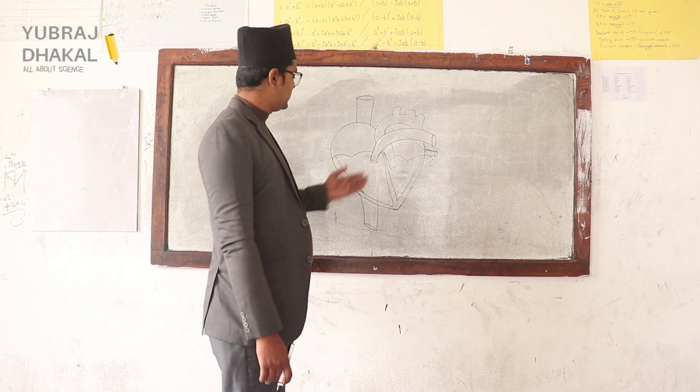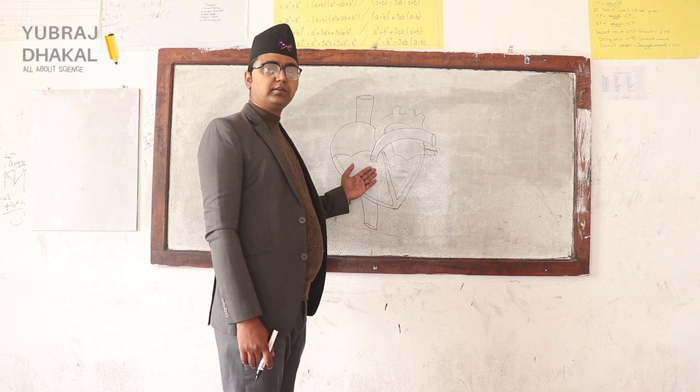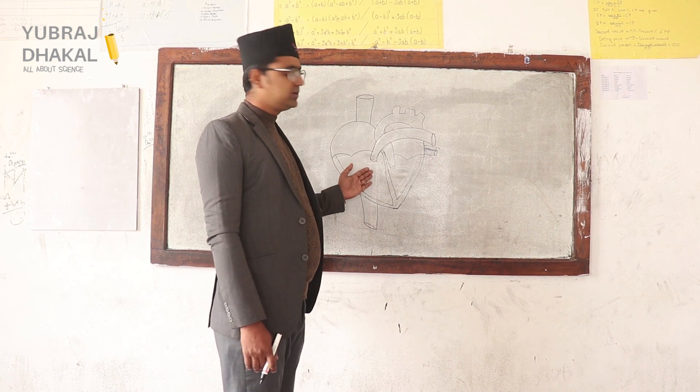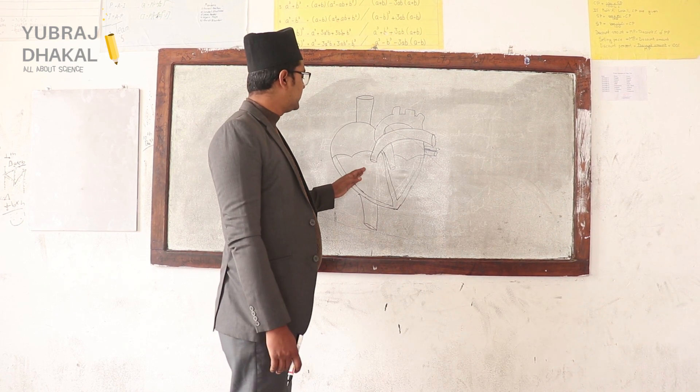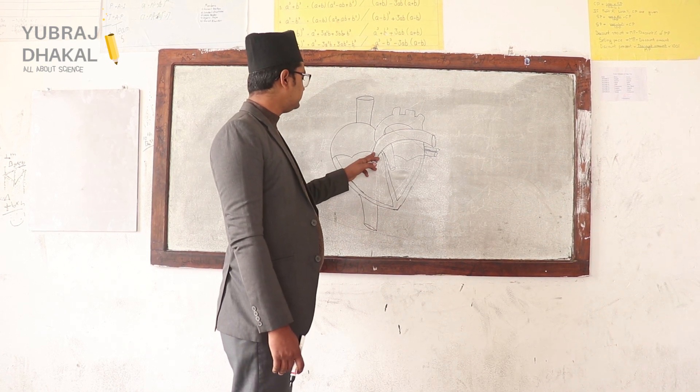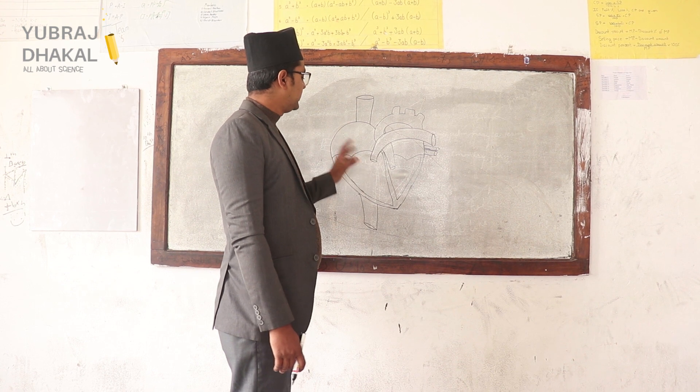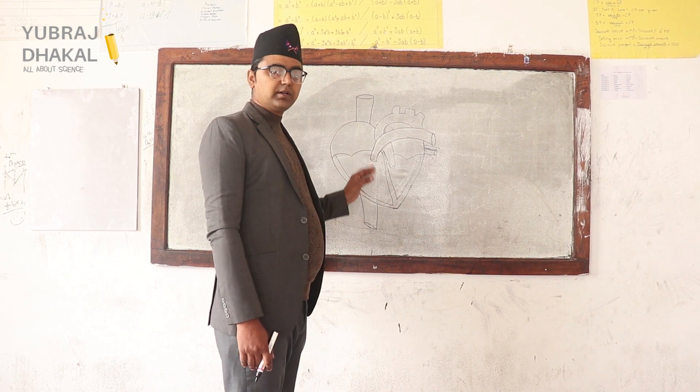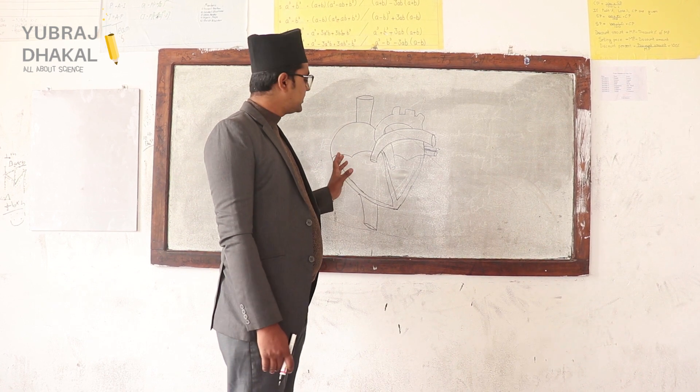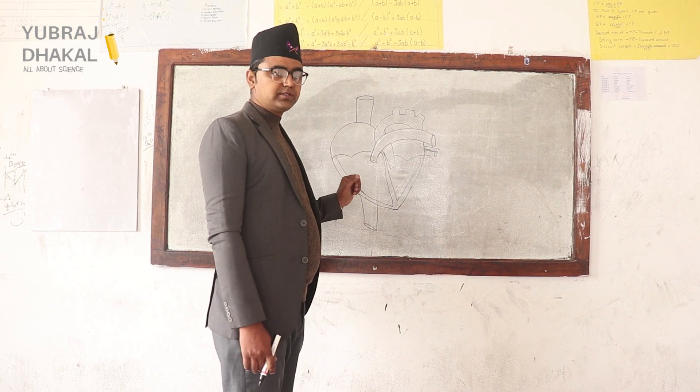Let's see — this is one human heart. In the human heart, generally there are four chambers.